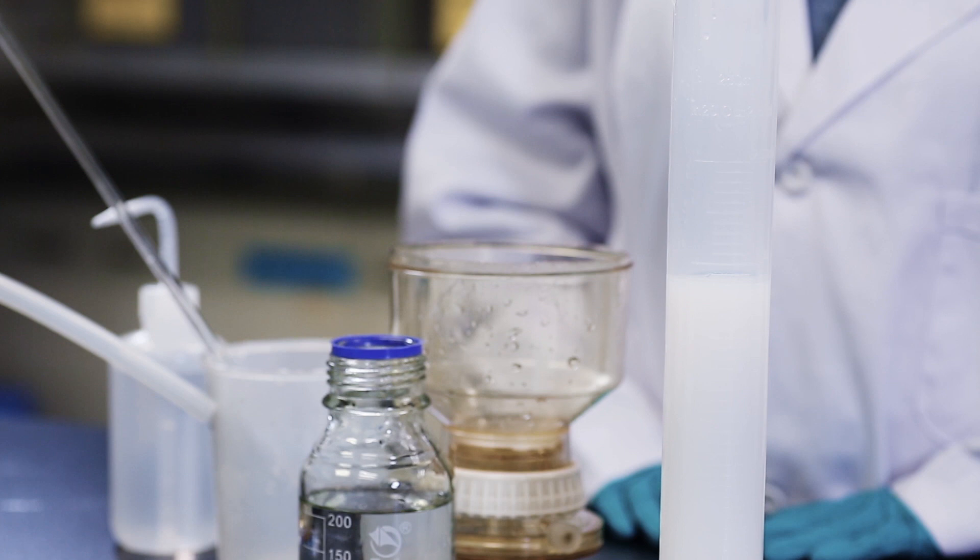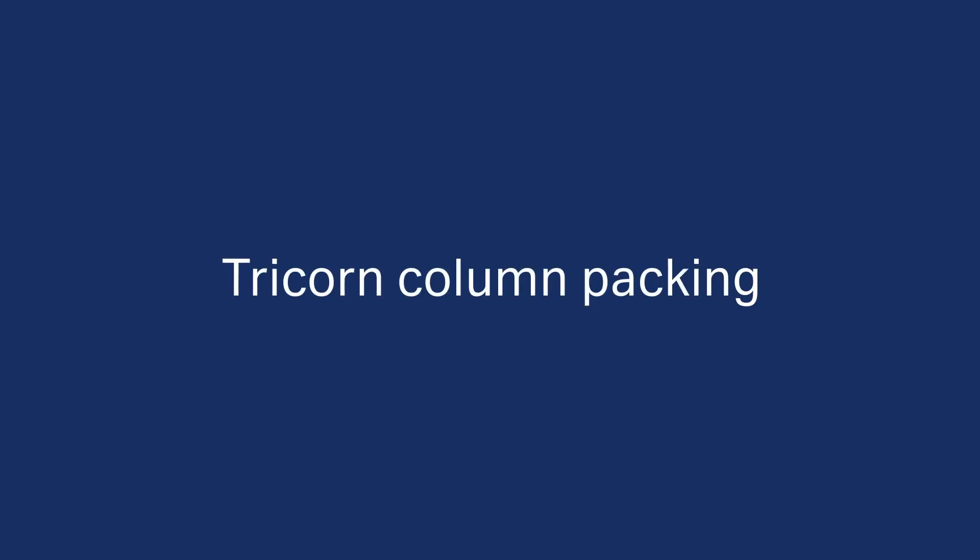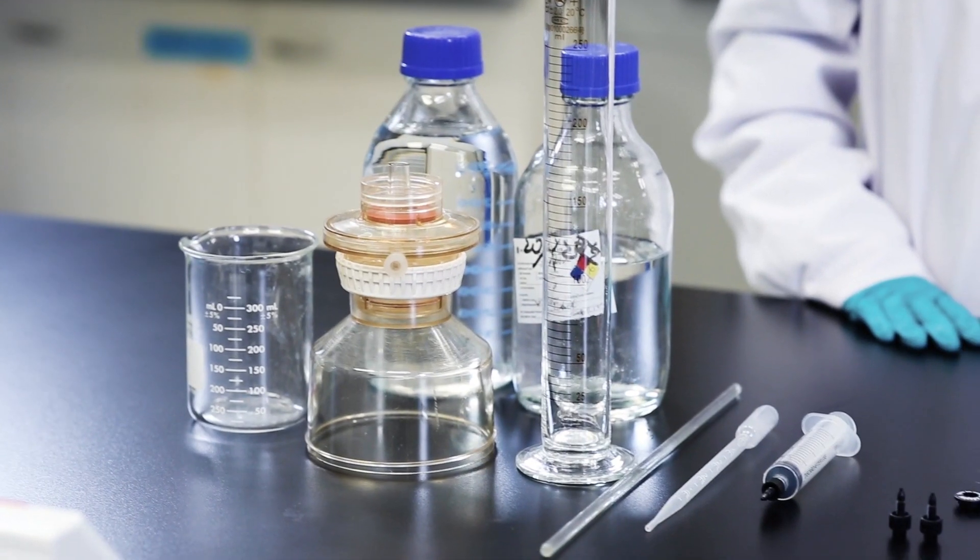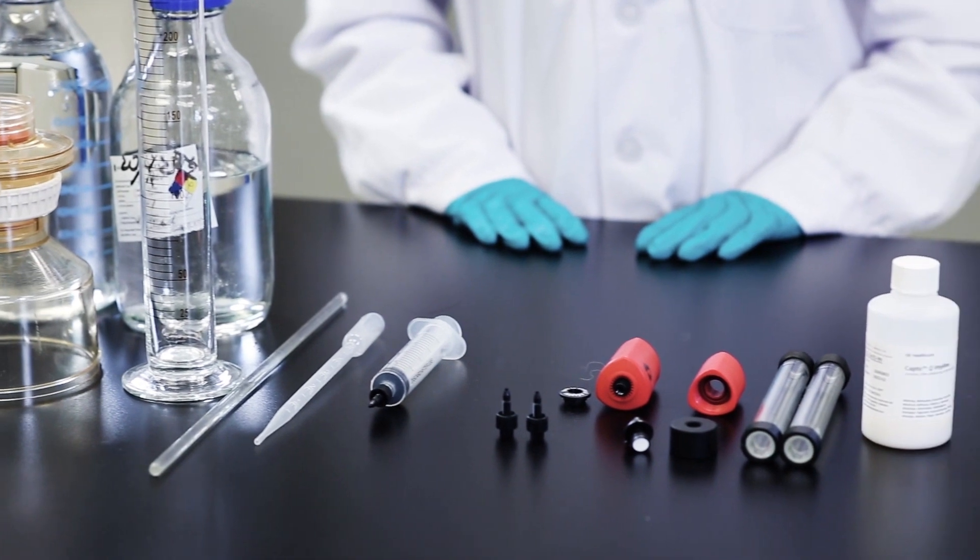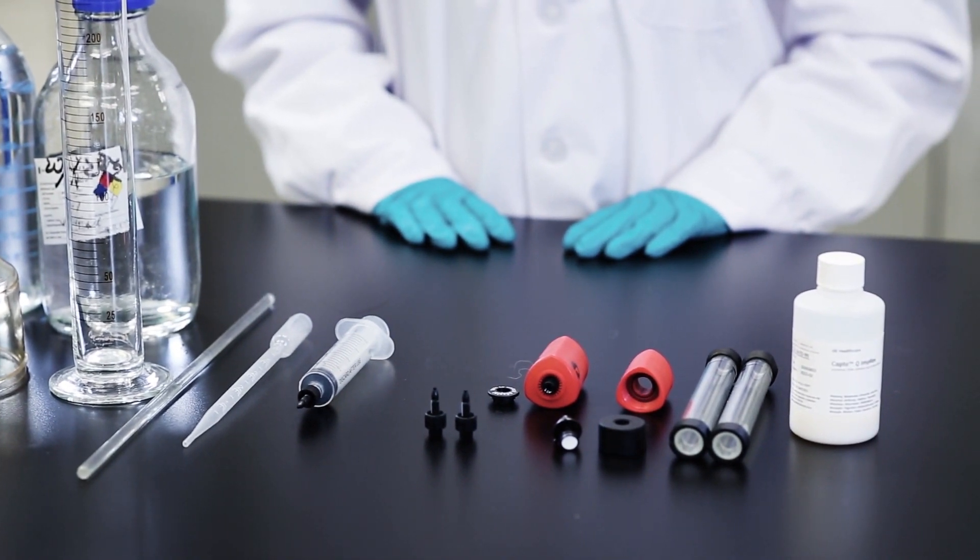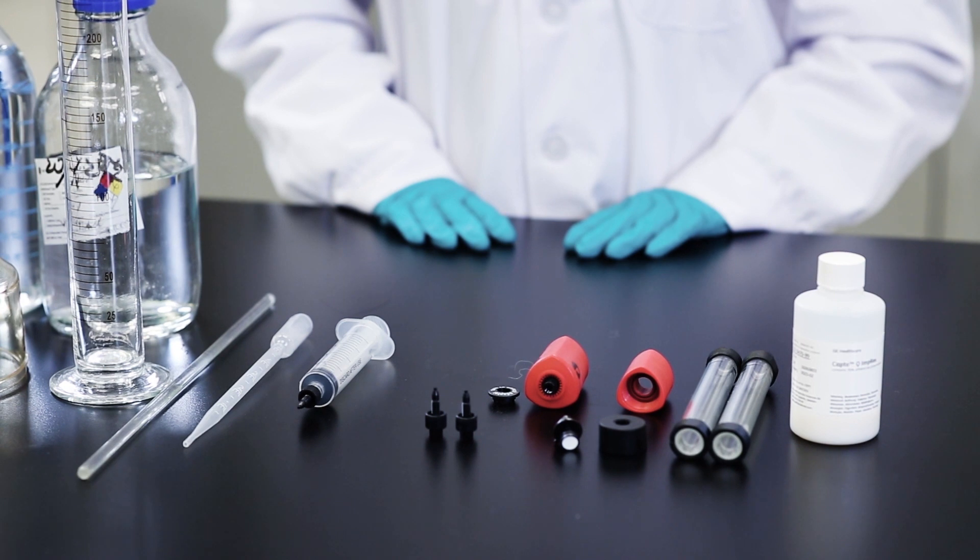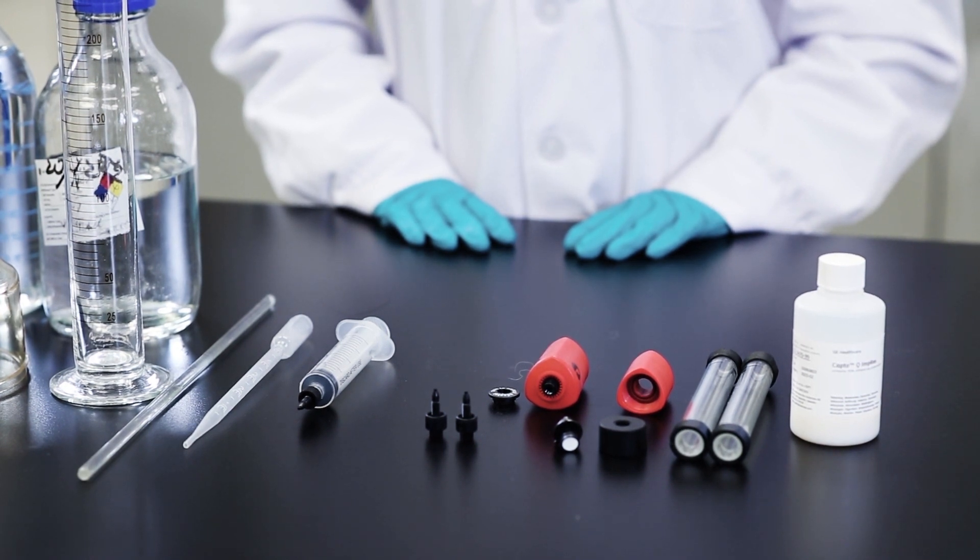Now that you have prepared the resin, the next step is to prepare the column. In this video, we will guide you how to pack a Tricorn column with the anion exchanger Capto-Q Impress. The dimension of the column is 10 mm inner diameter and 10 cm height. We will pack the column with approximately 7 milliliters of resin.